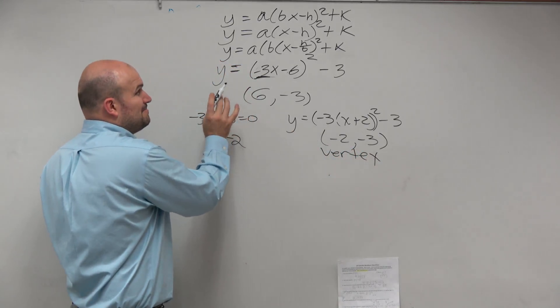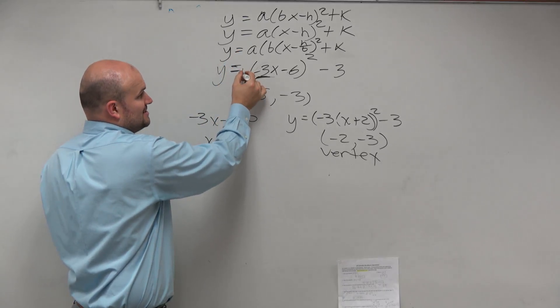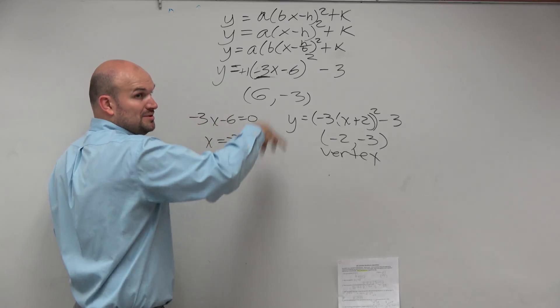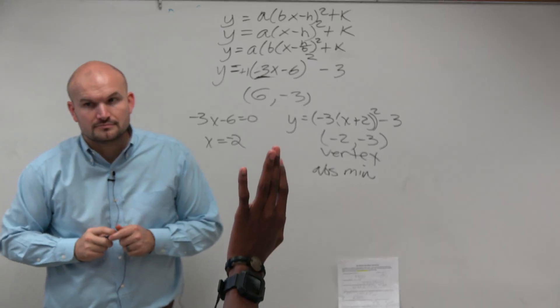But this is now my vertex. And then is my A positive or negative? A. Positive. Positive, that's a positive one right there. So therefore it opens up. So therefore this is an absolute min.